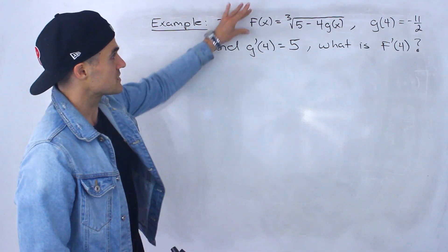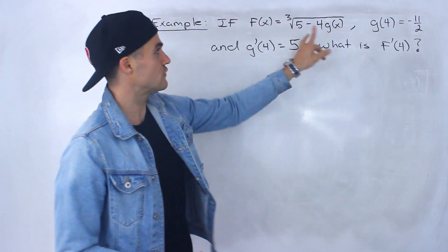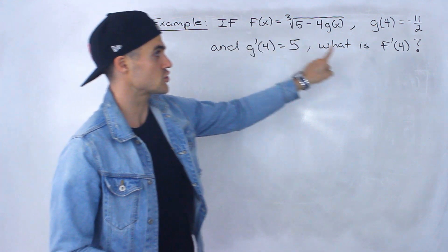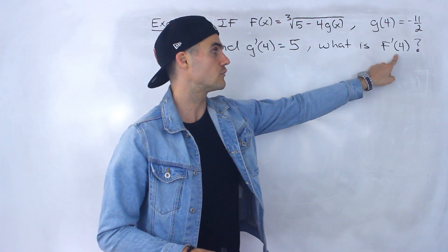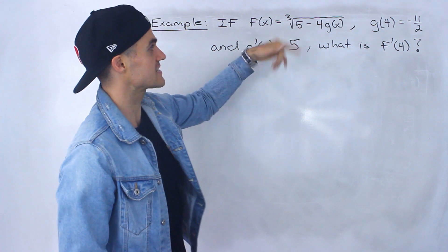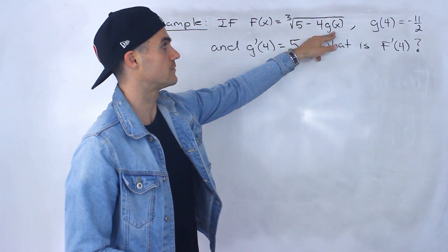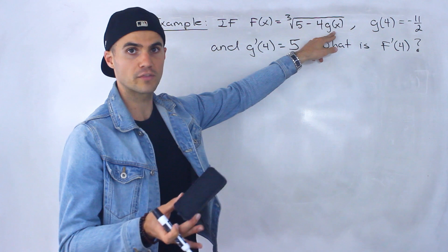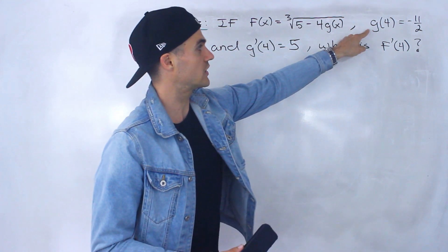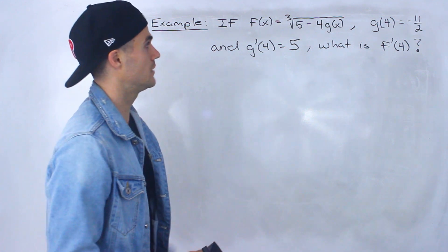Notice we have this function f of x here. They're asking for the value of the derivative of this function at an x value of 4. But notice that this function has another function within it, this g of x. Now we don't know what the function g of x is, but we're given a bunch of information about it.